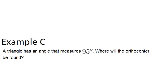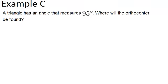Lastly, let's look at example C. A triangle has an angle that measures 95 degrees. Where will the orthocenter be found?